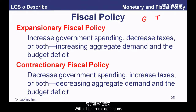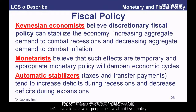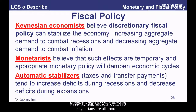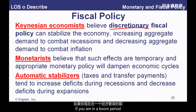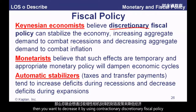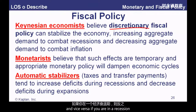So we know the basic definitions. Let's look at what people believe about fiscal policy. Keynesians are all about it. If you're a Keynesian economist, then discretionary fiscal policy can stabilize the economy. If you're in a boom period, you want to decrease it using contractionary discretionary fiscal policy, and vice versa if you are in a recession.